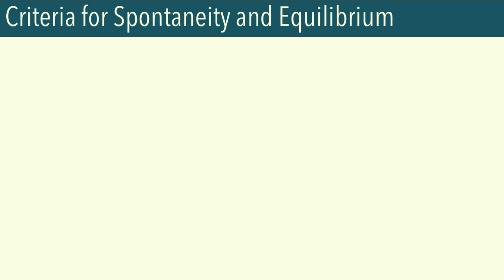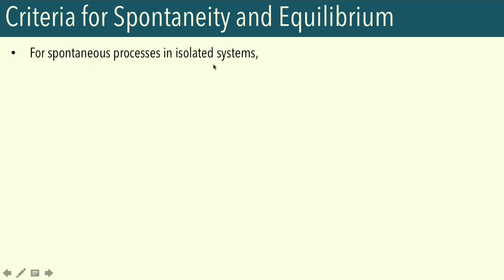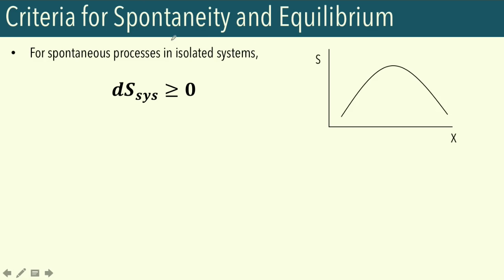Recall what we discussed from our last video — we looked at different criteria for spontaneity. From the second law, we derived entropy as a state function. We saw from the Clausius inequality that for spontaneous processes in isolated systems, the entropy of the system will be positive or equal to zero. More specifically, an irreversible process will lead to an increase in entropy until it reaches the maximum, which is the equilibrium state.